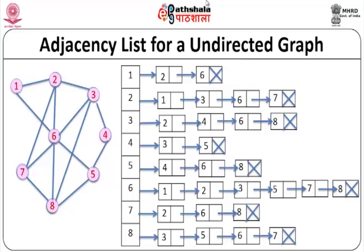An example adjacency list for an undirected graph: node 1 connects to 2 and 6; node 2 connects to 1, 3, 6, and 7; node 3 connects to 2, 4, 6, and 8; node 4 connects to 3 and 5; node 5 connects to 4, 6, and 8; node 6 connects to 1, 2, 3, 5, 7, and 8; node 7 connects to 2, 6, 8, and 9; node 8 connects to 3, 5, 6, and 7. The number of head nodes equals the number of vertices and the total list nodes equals the number of edges.